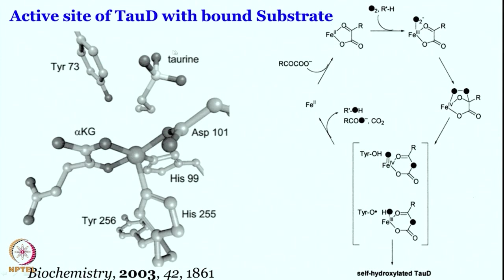If the organic substrate R-H is not there, tyrosine will come into the picture. In absence of R-H, the superoxo intermediate is generated: iron(II) reacts with oxygen to give iron(II)-superoxo, which then attacks on the keto moiety of alpha-KG. From there, rearrangement gives rise to the iron(IV)-oxo intermediate. In absence of taurine or a suitable substrate, this iron(IV)-oxo species can abstract a hydrogen atom from tyrosine — the phenolic OH — giving a tyrosine radical, and then hydroxylation can proceed.